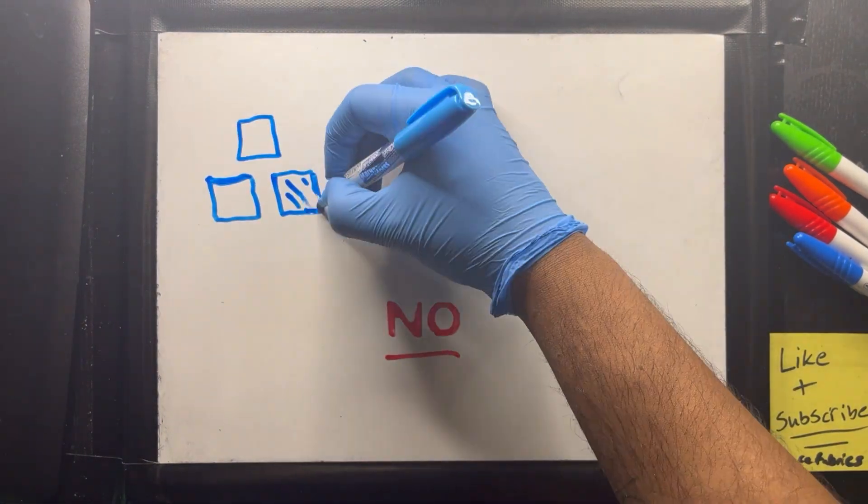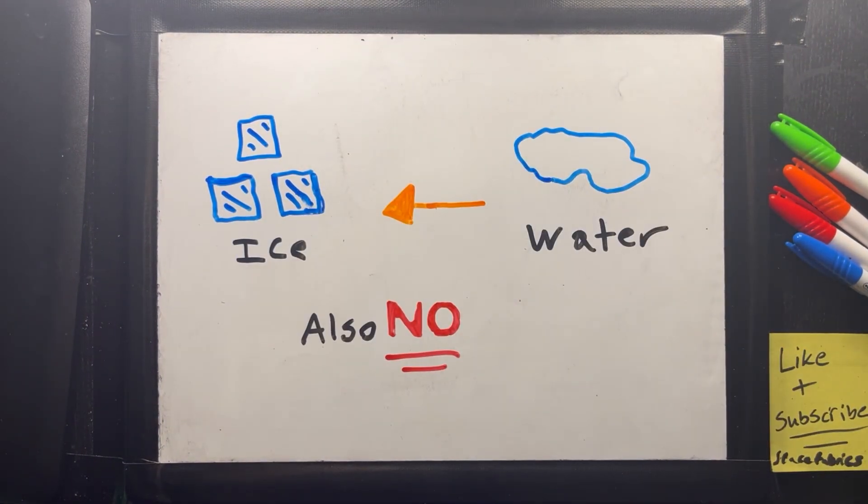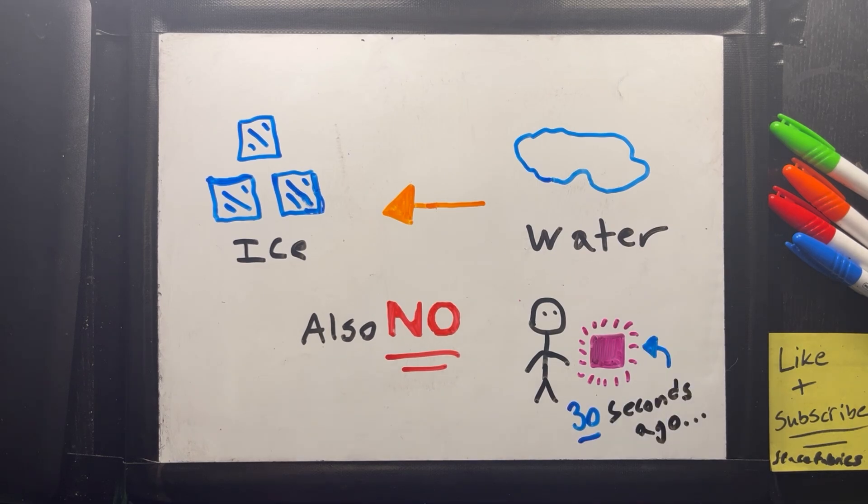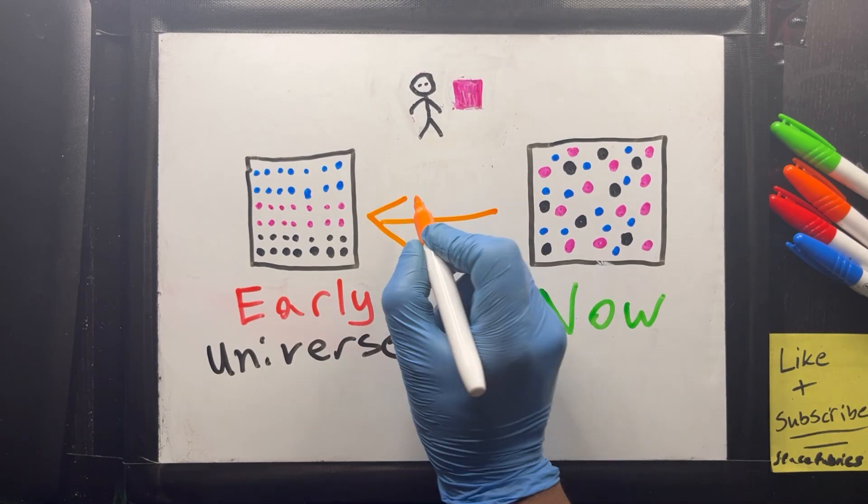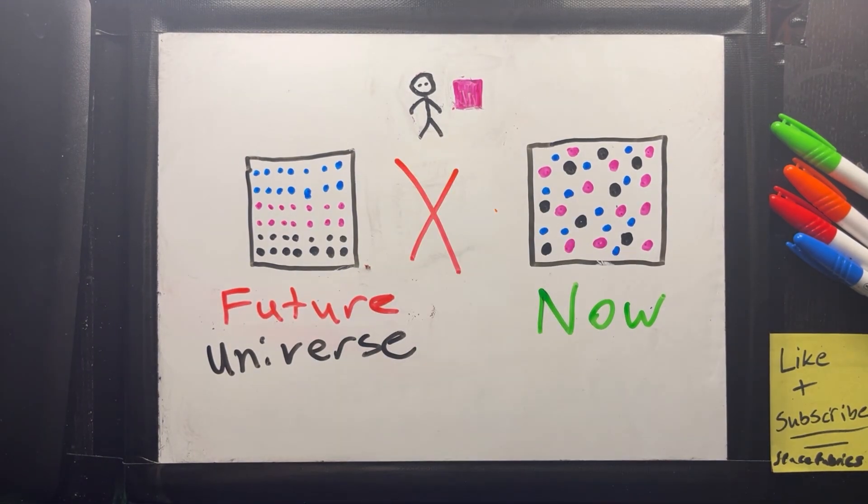Or ice melting but never unmelting. The forward motion of time and the nature of entropy might act as a barrier. To travel back in time, you would need to first reverse entropy and violate the laws of thermodynamics.